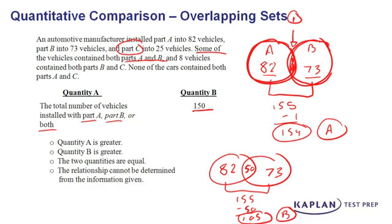That lets us know automatically our final answer must be answer choice D. Whenever in quantitative comparisons you notice you can get different relationships with the two quantities — meaning in one scenario Quantity A is greater and in another Quantity B is greater — when you have a scenario like this, your answer choice must be D on test day.